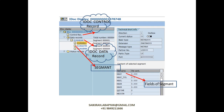So the IDOC structure is similar to what you see on the screen now. It has got three parts: one is the control record, the second one is the data records, and the third one is the status records.